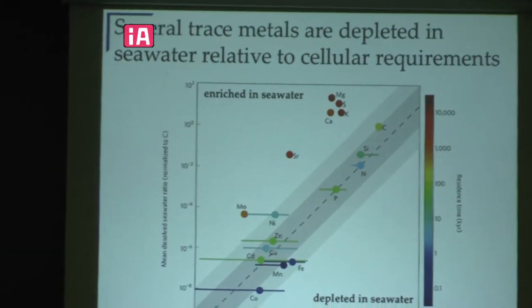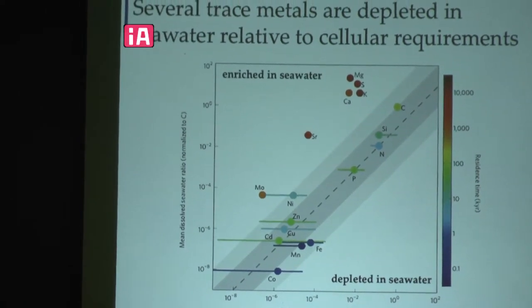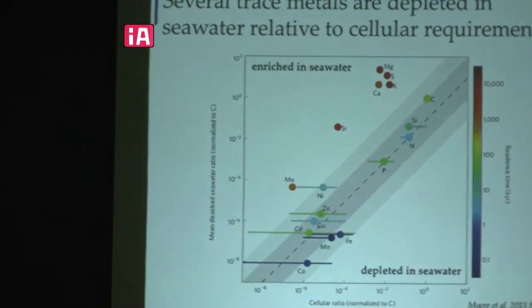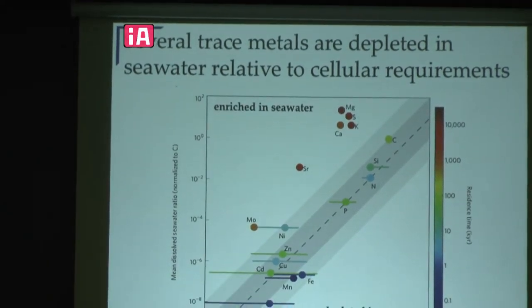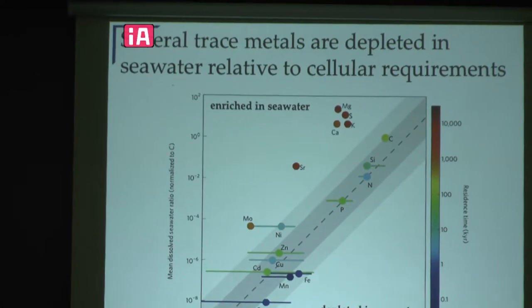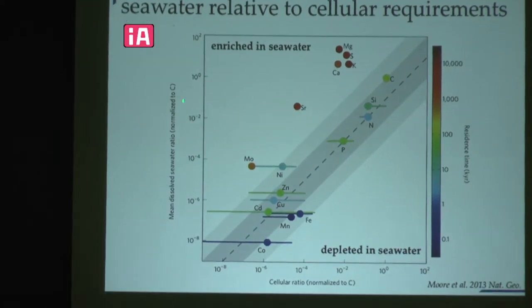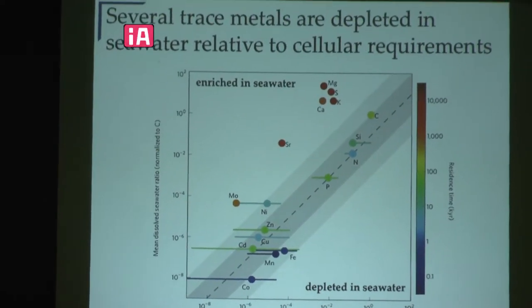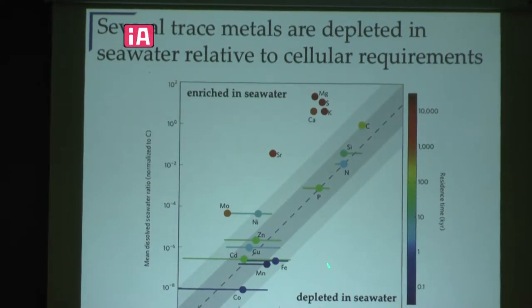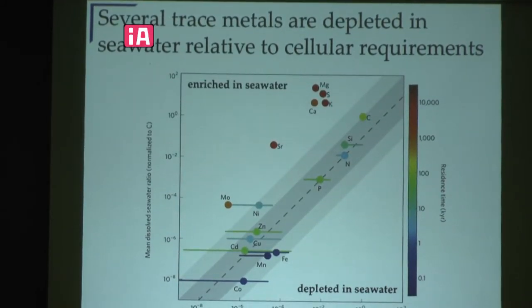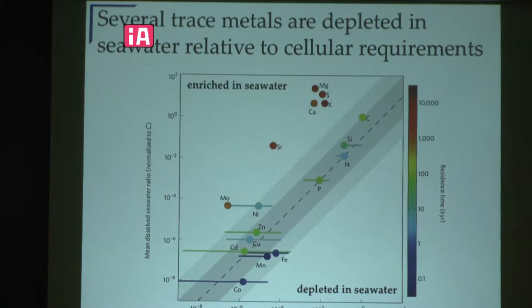It's kind of complicated in seawater and we call them trace metals because they're generally very scarce. This graph shows the cellular ratio of a given element required for phytoplankton growth on average in the ocean versus the concentration of that element in seawater. Anything to the right of the plot is relatively depleted in seawater, and the colors represent the residence time of that element.